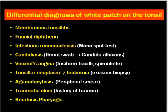How do we differentiate white patches on the tonsil? The most common infection causing white patches is acute membranous tonsillitis. Other causes include tonsillar diphtheria, infectious mononucleosis, candidiasis, Vincent's angina, tonsillar neoplasm, leukemia, agranulocytosis, traumatic ulcer on the tonsil, and keratosis pharyngeus — all of which may present with white patches on the tonsil.